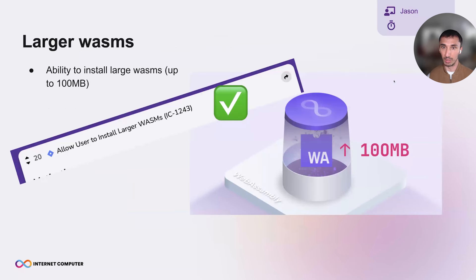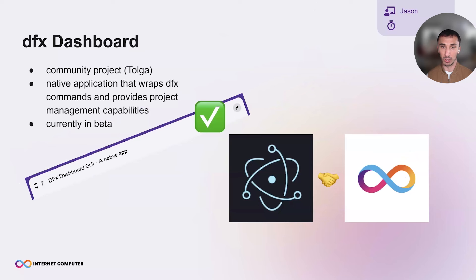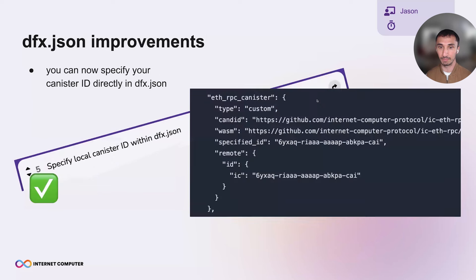First, we've increased the size limit of the Wasm modules that you can install in your canister to 100 megabytes — this will help you scale your dapps as your needs grow. Second, better warnings in Motoko: the compiler will now print a warning if there are any unused identifiers in your code. Third, the DFX dashboard — a community project, a native Electron application that wraps DFX commands and provides project management capabilities, currently in beta.